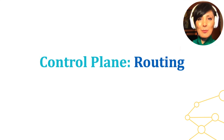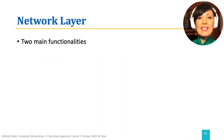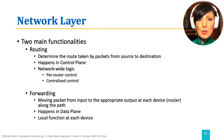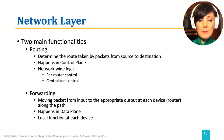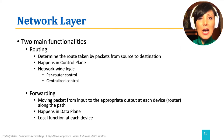We are finally here at this exciting point exploring the control plane function of routing. The network layer consists of two main functionalities: routing and forwarding. Routing, which has a network-wide logic, happens in the control plane and determines the route taken by packets from source to destination. Forwarding, which moves packets from input to the appropriate output at each router along the path, happens in the data plane. We discussed forwarding in traditional destination-based forwarding as well as generalized forwarding in software-defined networking. We now want to discuss routing, starting with traditional routing.